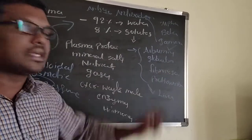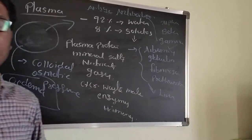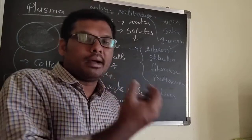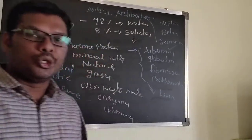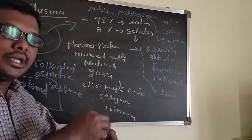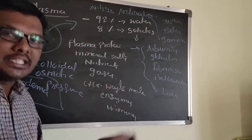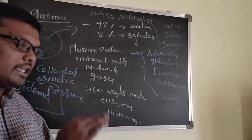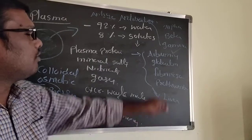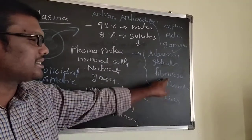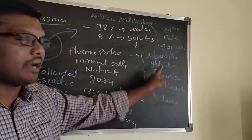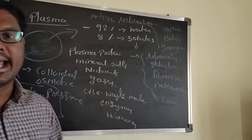Fibrinogen and prothrombin are the blood clotting factors. Suppose the body is injured — blood oozes out from the injury. That blood is clotted with fibrinogen and prothrombin. These are the inactive forms that get converted to active forms.